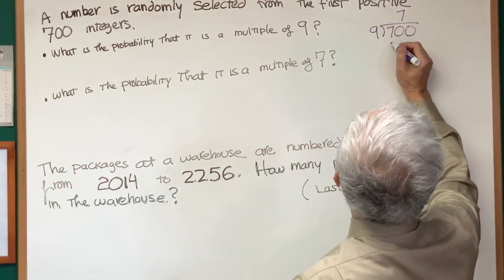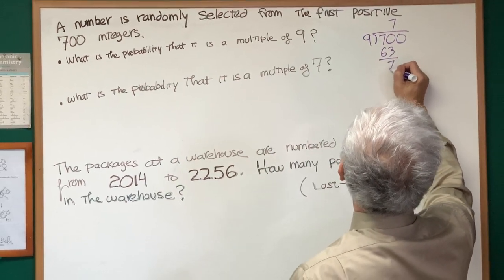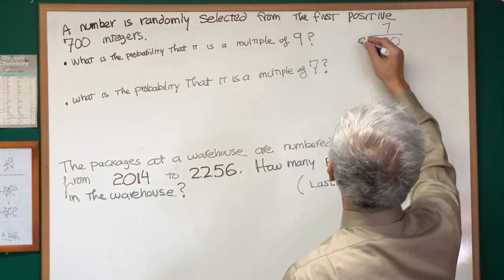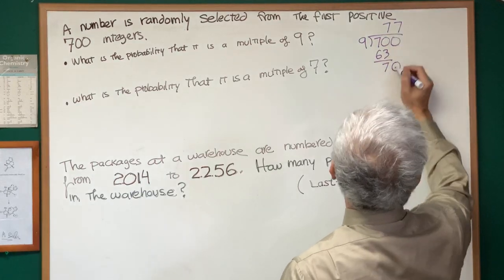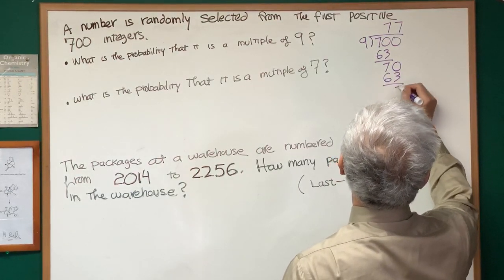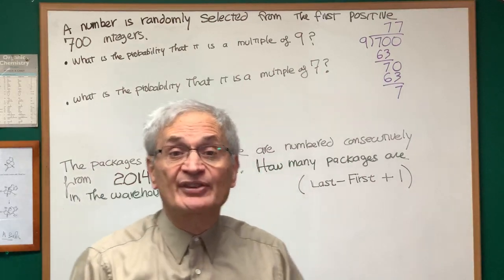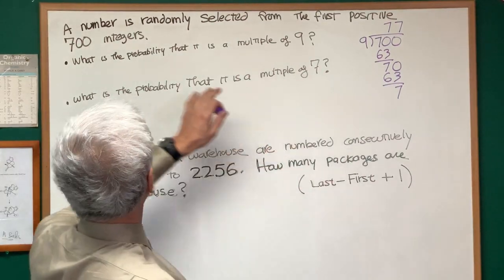So 7 times 9 is 63 with a remainder of 7, carried down to 0. 9 goes into 70 again, 7 times 9 is 63 with a remainder of 7. So there are 77 multiples of 9 in the numbers between 1 and 700.